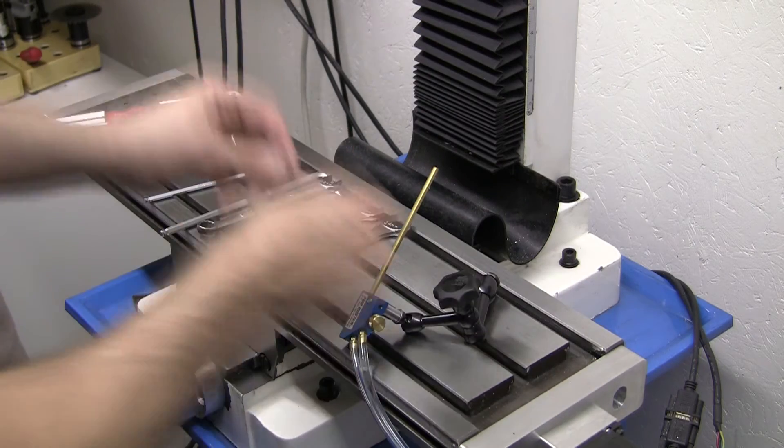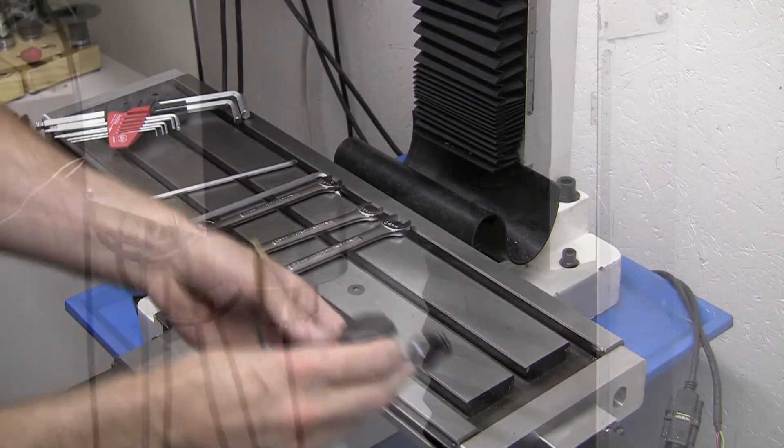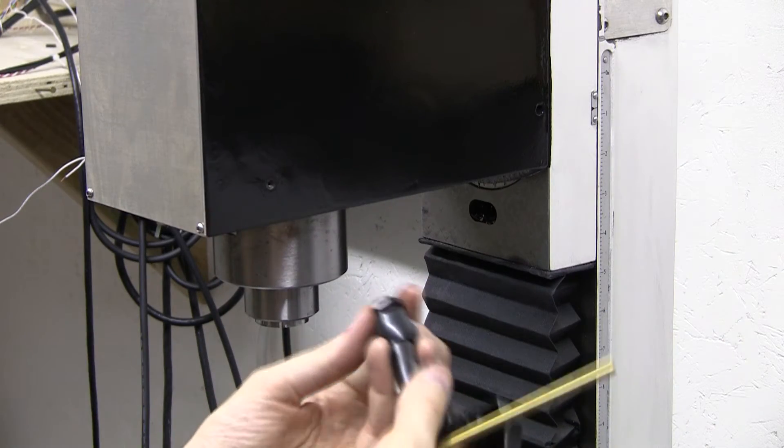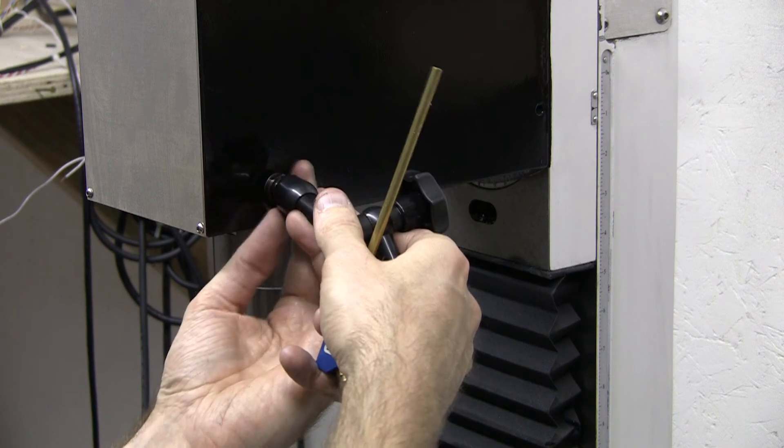At this point the adapter has been threaded onto the Noga arm with a lock washer between the two. The fog buster has been mounted onto the adapter with the set screw holding the fog buster in place.